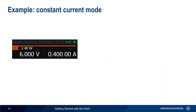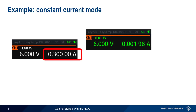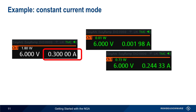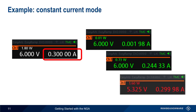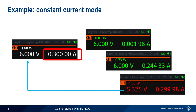Now let's decrease the current value from 400 milliamps to 300 milliamps. The output voltage still starts out at 6 volts and remains constant when output current changes, but only as long as the limit of 300 milliamps is not exceeded. If, however, more than 300 milliamps would be drawn, the NGA automatically switches to constant current mode, lowering the output voltage until the output current does not exceed the configured current limit. When operating in constant current mode, values of power, voltage, and current are displayed in red.